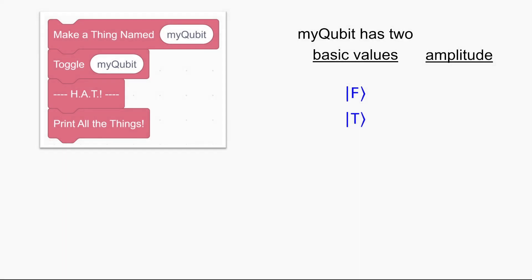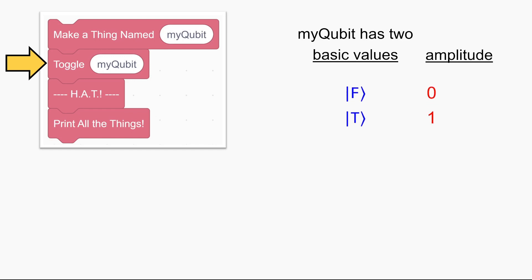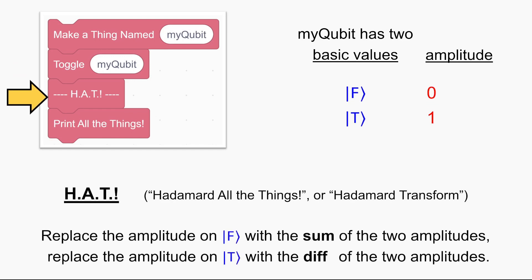The first line initializes my qubit, putting us into a state where all one of the amplitude is on false. The next line toggles my qubit, which switches false and true. So now my qubit has amplitude one of being true and zero amplitude of being false. Then we come to the Hadamard instruction. We replace the amplitude on false with the sum of the two amplitudes, and the amplitude on true with the difference. The sum is 0 plus 1, which is 1, and the difference is 0 minus 1, which is negative 1. So after this Hadamard instruction, the new state is amplitude 1 on false and amplitude negative 1 on true.